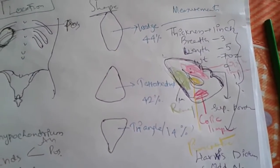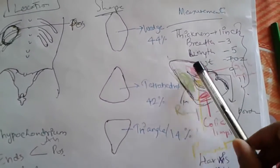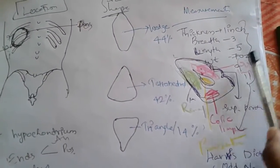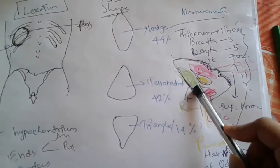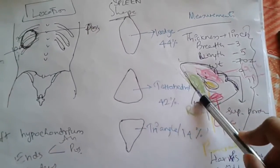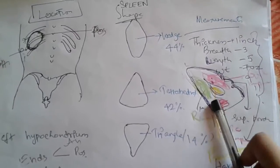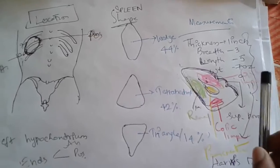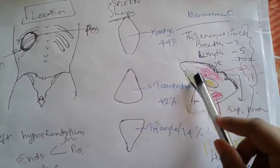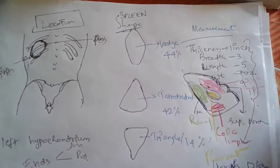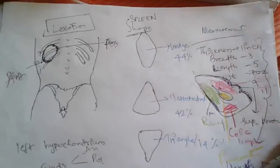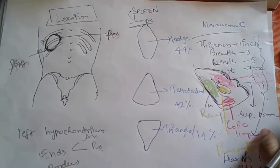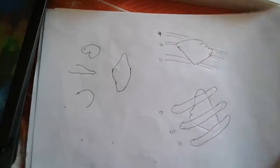To summarize, the visceral surface of the spleen has mainly four impressions: the gastric impression, which is found between the superior border and the intermediate border with the hilum of the spleen; the renal impression, found between the intermediate border and the inferior border; the colic impression, found at the lateral end; and the pancreatic impression, found at the hilum. The diaphragmatic surface relates to the 9th, 10th, and 11th ribs.